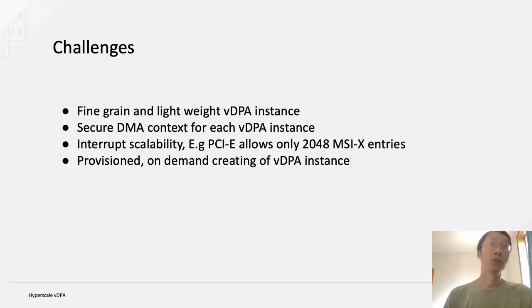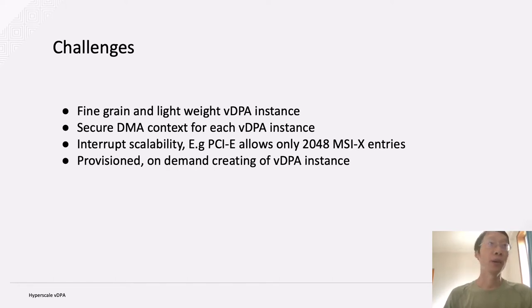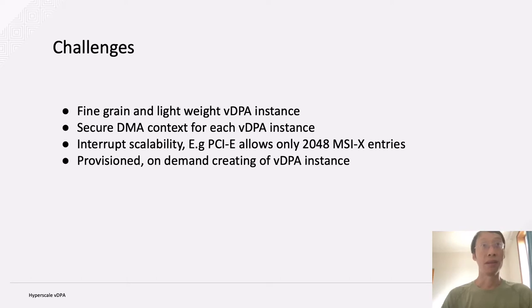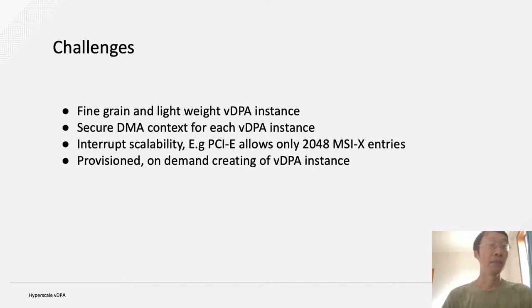First, how to achieve fine-grained or lightweight VDPA instances. Second, we need to provide a secure DMA context for each VDPA instance. Third, we need to think about how to scale the in-band interrupt — the major limitation is PCIe, which only allows about 2K MSIX entries. And fourth, we need to provide an interface for the management layer to provision VDPA instances.